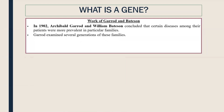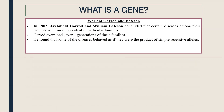They observed many generations of these families — 2 to 3 generations — and Garrod concluded that some diseases behave such that they become recessive traits. When two recessive alleles combine in one person, they can produce disease.